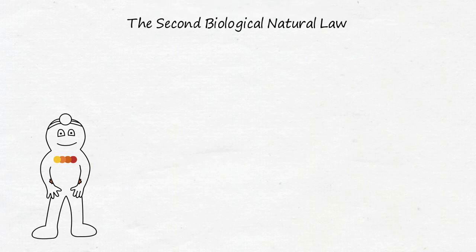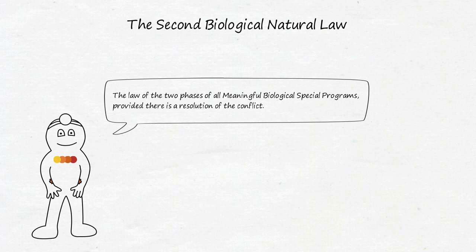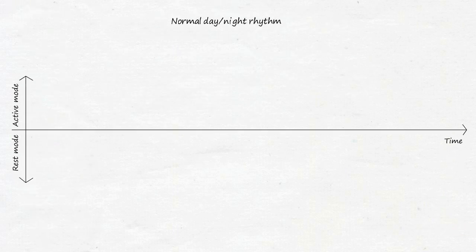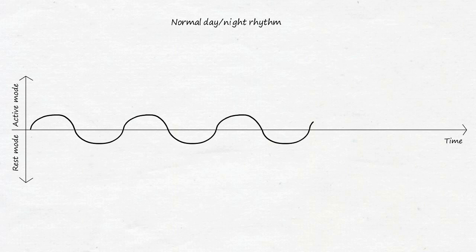As Dr. Hamer writes in the Second Biological Natural Law, the law of the two phases of all meaningful biological special programs, provided there is a resolution of the conflict. In the normal day-night rhythm, the organism switches between active and rest modes.